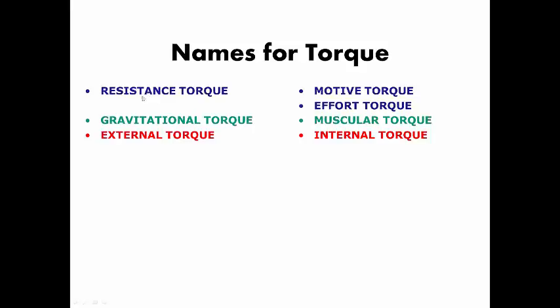So gravitational torque opposes muscular torque. And then if we talk about resistance torque, then you're also talking about effort torque or motive torque. Depending on what your slant is, people use different terminologies. I tend to use internal and external, or sometimes muscular and gravitational.